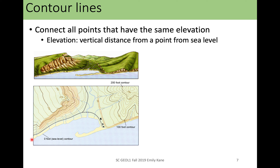Here in this picture we have the zero contour line — the zero foot contour line would be the line of sea level. So everywhere that is above sea level is on one side of the line, and everywhere that is below sea level is on the other side. Then you'll also see that this contour is the 100-foot contour — so everywhere along this line is 100 feet in elevation. Just like you can see on this map, the actual picture up where that 100 contour would be is much higher than at sea level.